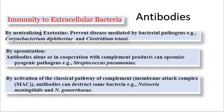Neutralizing antibodies are raised against exotoxins and lead to elimination of the toxicity of bacteria — for example, Corynebacterium and Clostridium tetani. Opsonizing antibodies alone or in cooperation with complement can opsonize pathogenic organisms — for example, in the case of Streptococcus pneumoniae, these antibodies opsonize the pathogen to the cell, or it is eliminated in cooperation with the complement system.